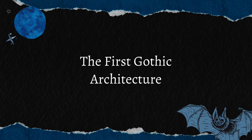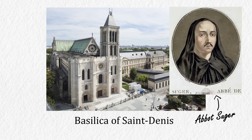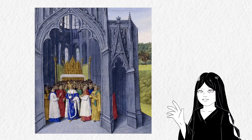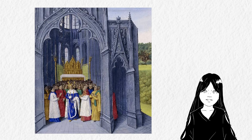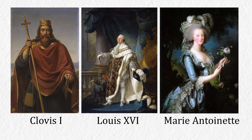Let's start with the first Gothic building, the Basilica of Saint-Denis in France. Even though the cathedral was regarded as the first Gothic architecture, it was actually built in late Roman times before being rebuilt in Gothic style during 1134 to 1144, under the supervision of Abbot Suger. This architecture was significant because it was a destination for Christian pilgrims since the year 250, and it is also the burial place for many prominent French monarchs, including Clovis I, the first king of the Franks, Louis XVI, and even Marie Antoinette.